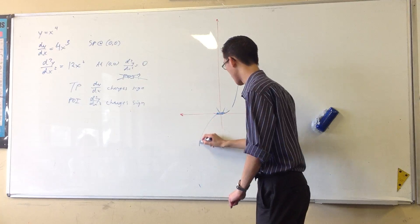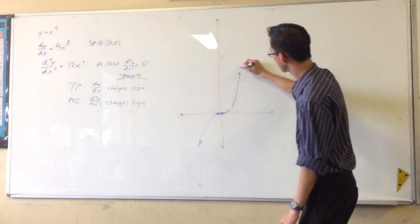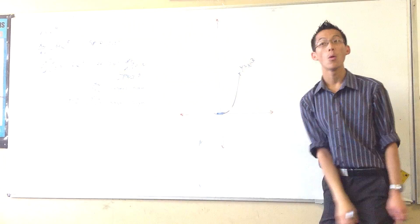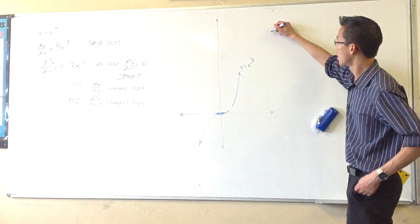So, here's what x cubed kind of looks like. y equals x cubed. So, first derivative.